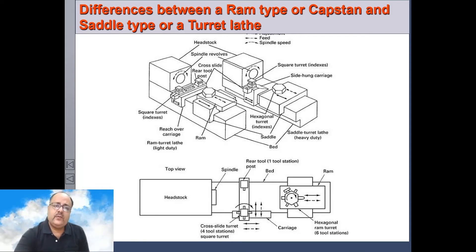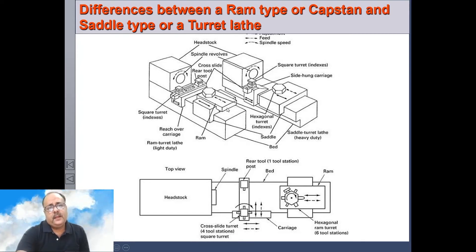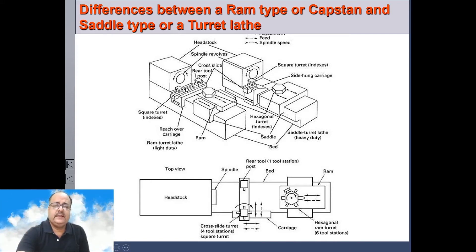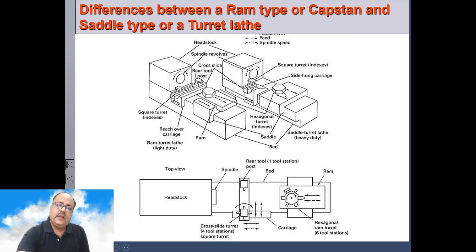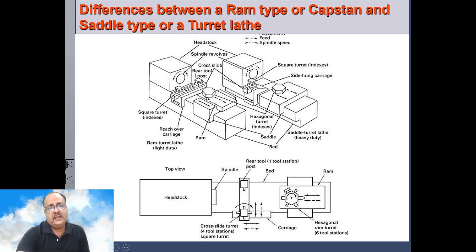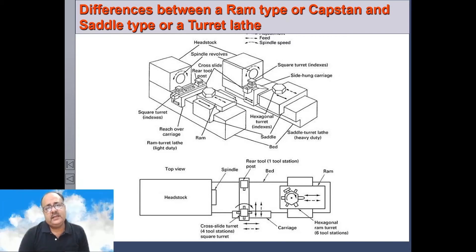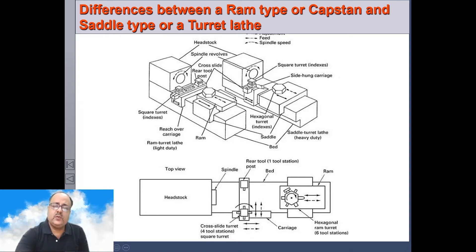The advantage of the ram type arrangement is that you can move the turret manually very easily, because you just move the ram forward to take the cut. In the saddle type, to move the turret you have to move the entire saddle unit, which is very cumbersome manually. Another difference is that as the ram extends forward during cutting, the distance between the saddle face and the turret face keeps increasing. This cantilever arrangement decreases the accuracy of the machine, whereas in a saddle type lathe the saddle and turret both move together, giving much better accuracy.